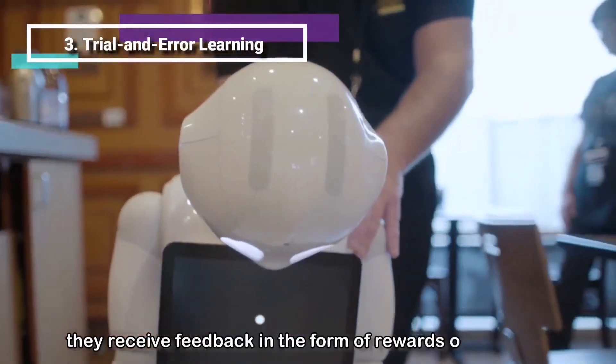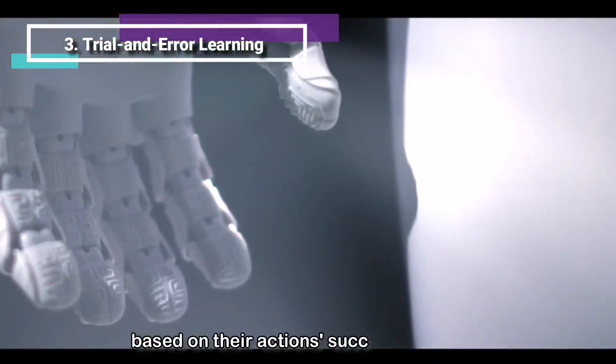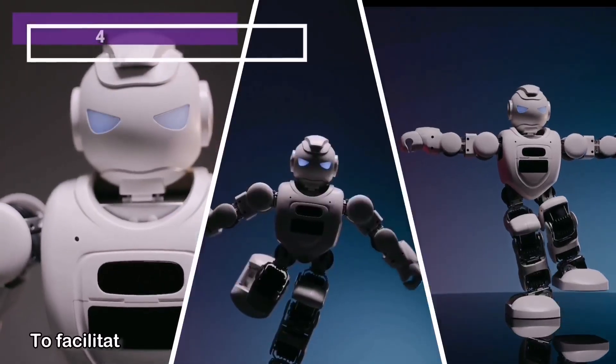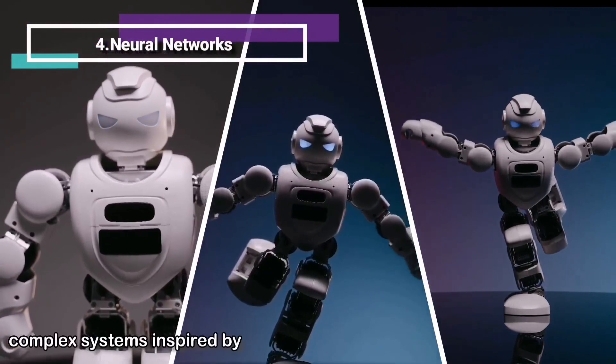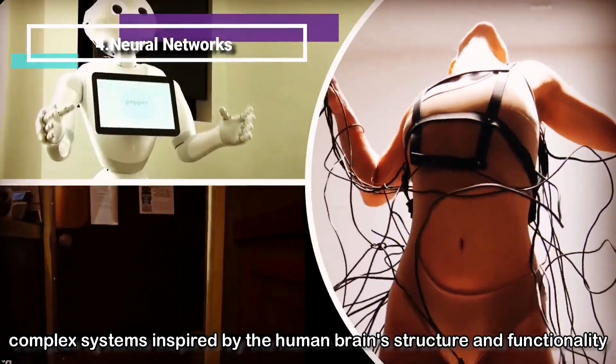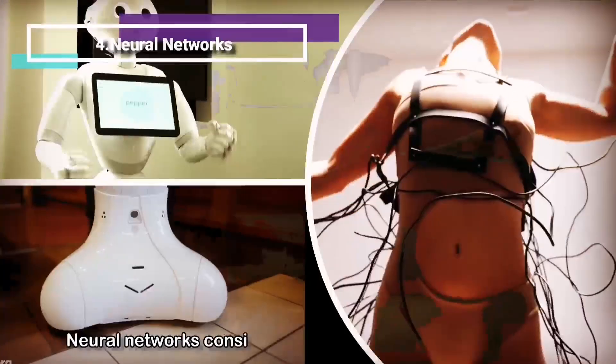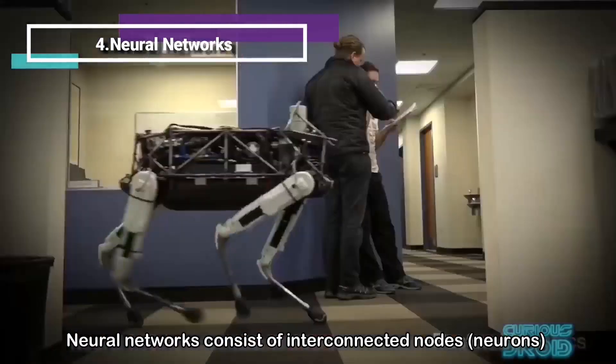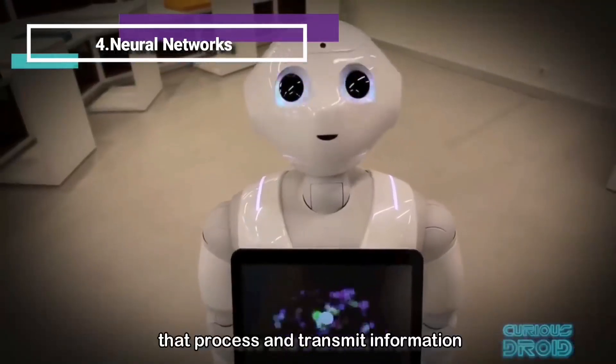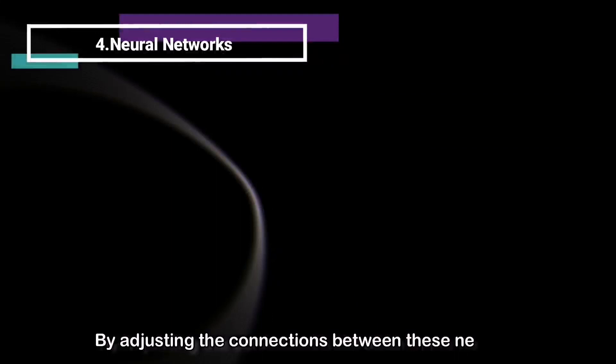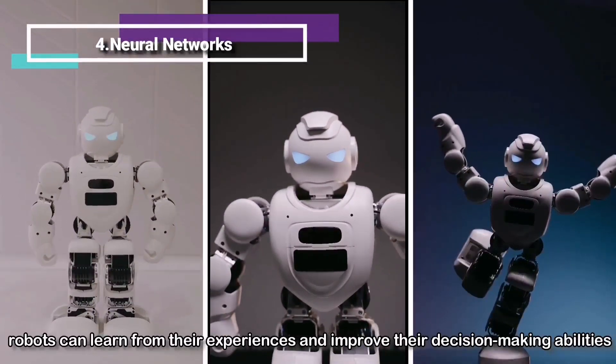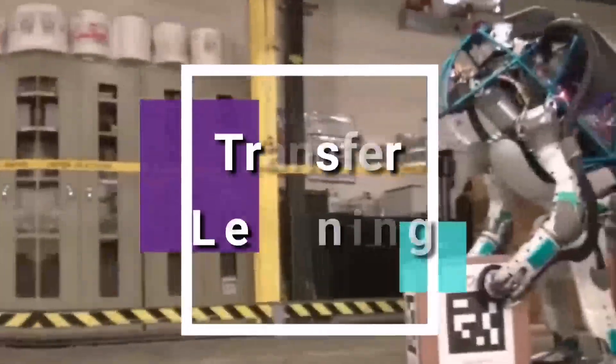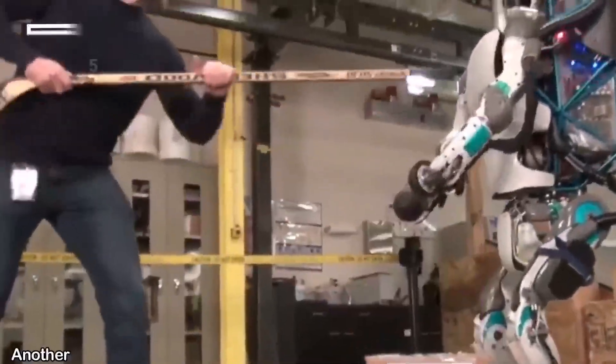Number four: neural networks. To facilitate this learning process, robots employ neural networks, complex systems inspired by the human brain structure and functionality. Neural networks consist of interconnected nodes, or neurons, that process and transmit information. By adjusting the connections between these neurons, robots can learn from their experiences and improve their decision-making abilities.